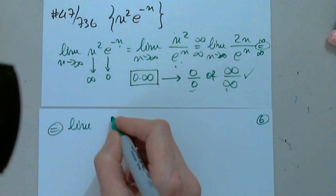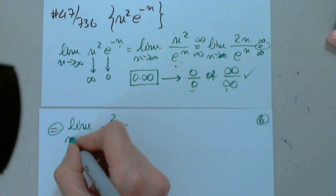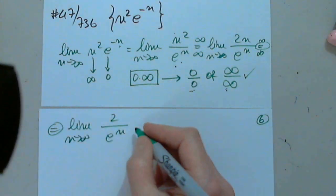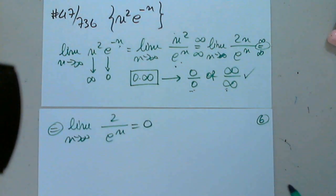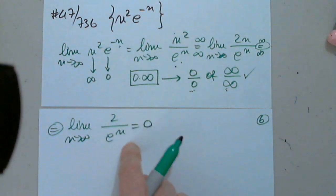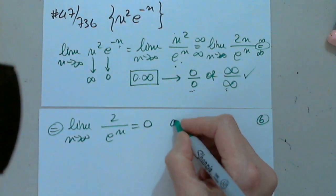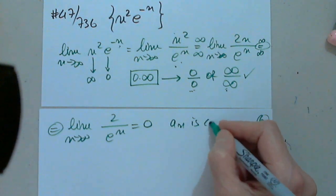So this is the limit of 2 over e to the n. As n approaches infinity, this is good enough. The limit is zero because 2 divided by infinity is zero. So then a sub n is convergent.